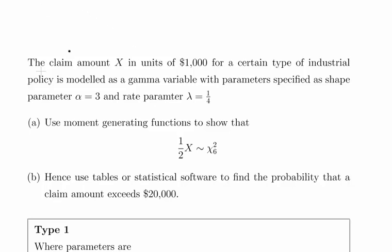In this presentation we are going to look at the gamma distribution. The claim amount X in units of $1000 for a certain type of industrial policy is modeled as a gamma variable with parameters specified as the shape parameter alpha equals 3 and rate parameter lambda equals 1/4.